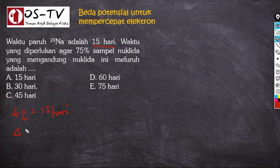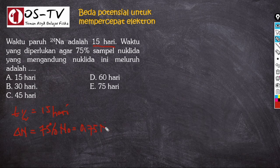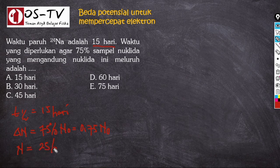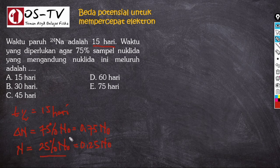Jumlah nuklida yang sudah meluruh ΔN = 75% dari N₀ = 0,75 N₀. Maka sisa nuklida yang ada adalah N = 25% dari N₀ = 0,25 N₀. Ini karena dari 100%, sudah meluruh sebanyak 75%.